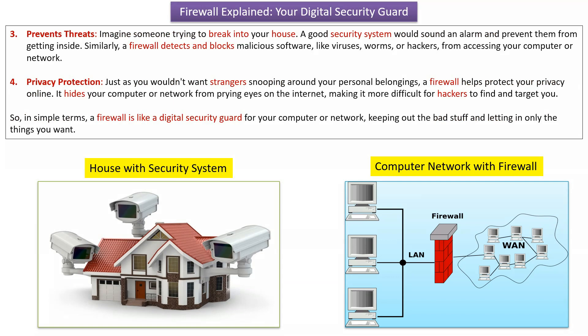The third point is prevents threats. Imagine someone trying to break into your house — a good security system would sound an alarm and prevent them from getting inside. Similarly, a firewall detects and blocks malicious software like viruses, worms, or hackers from accessing your computer or network.